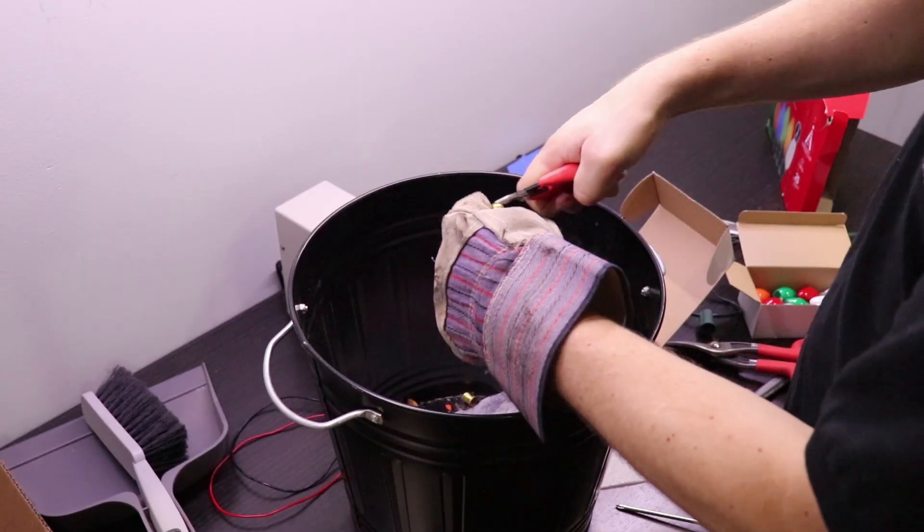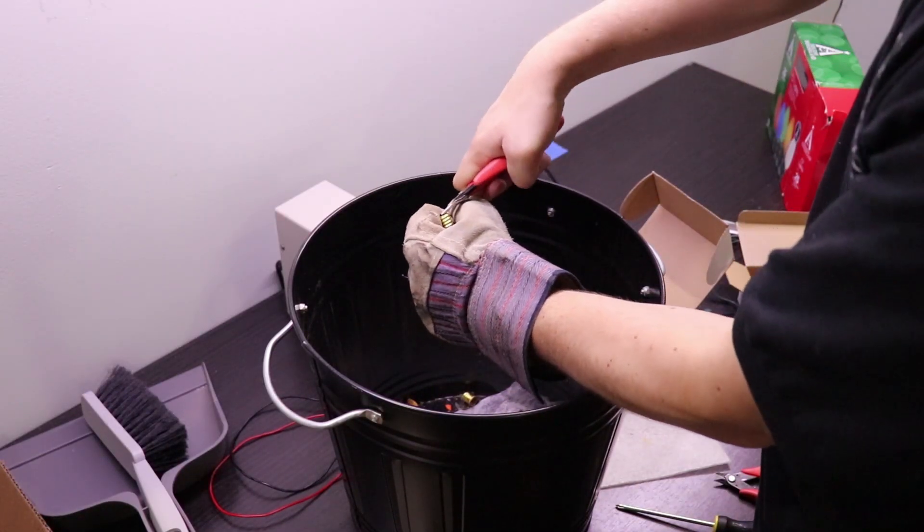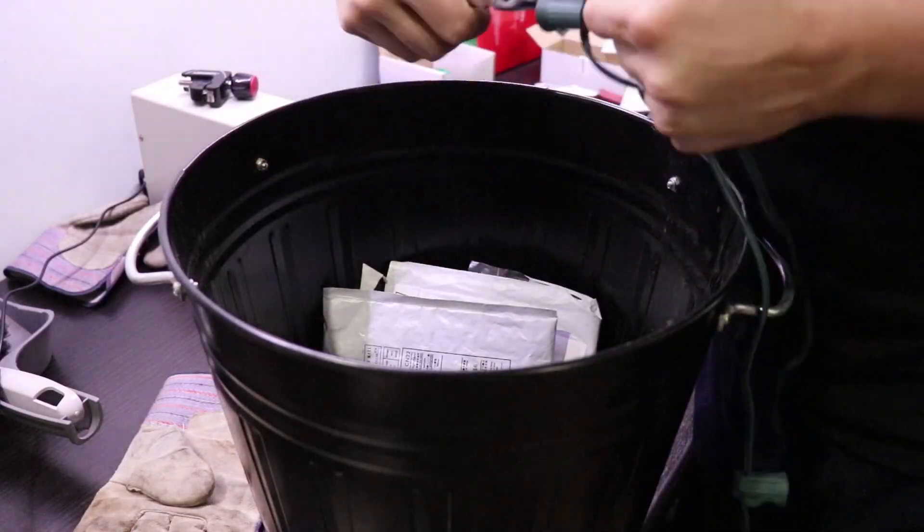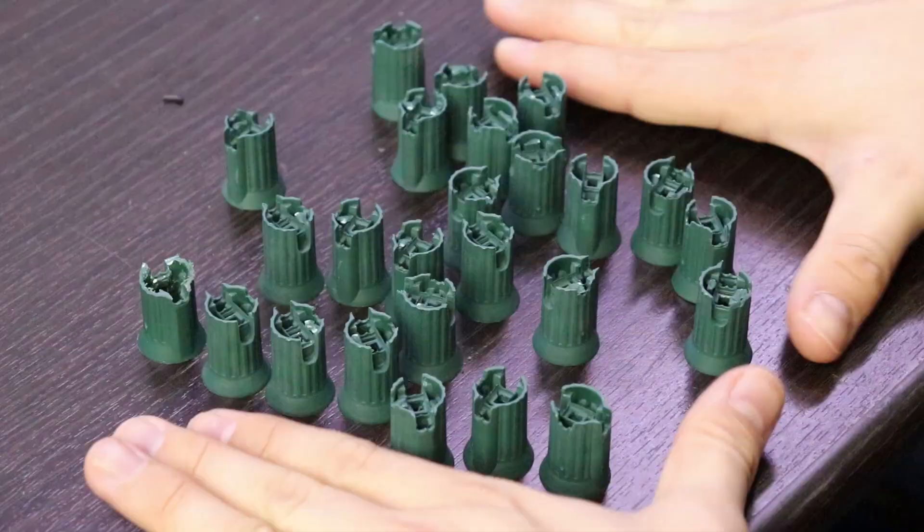I needed to end up with at least 26 bulbs, one for each letter of the alphabet. After I finished hollowing out the bulbs, I took a pair of pliers and yanked out the green base where the bulbs screw into.